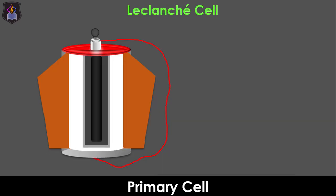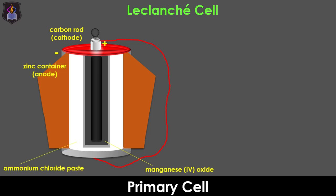In the Leclanche cell, the anode is made up of a zinc container while the cathode is a carbon rod immersed in manganese 4 oxide powder. The electrolyte is an ammonium chloride solution in the wet cell or ammonium chloride paste in the dry cell. The carbon rod and manganese 4 oxide are separated from the electrolyte by a muslin bag which acts as the porous partition. The Leclanche cell is the common TV remote control battery you use in your homes.